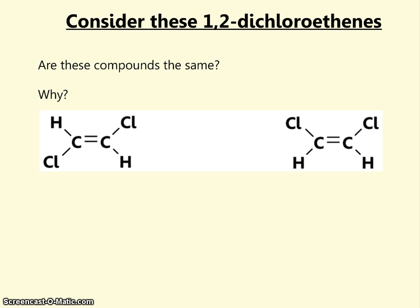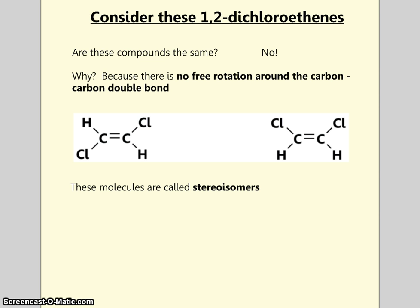Now let's consider these 1,2-dichloroethenes — the name is now ethene because we have a carbon-carbon double bond in each of these. Are these two compounds the same? There is no free rotation around a carbon-carbon double bond, so the answer is that these compounds are not the same. You cannot merely twist around these bonds to align the molecules so that the chlorine atoms are on the same side. These molecules are known as stereoisomers.